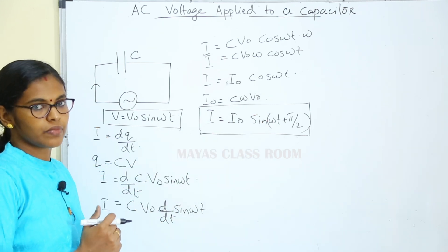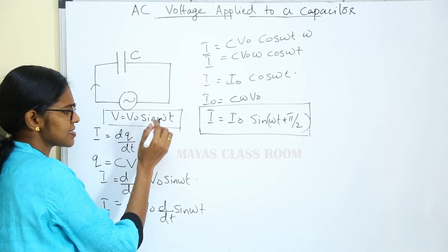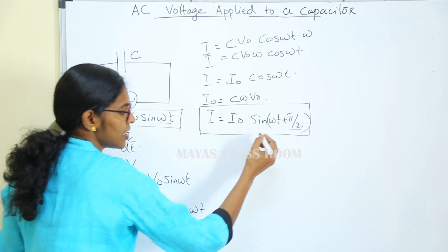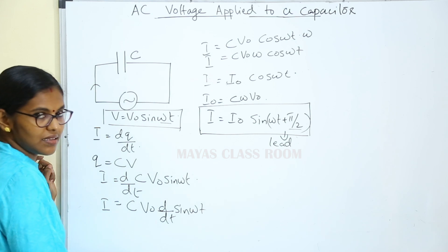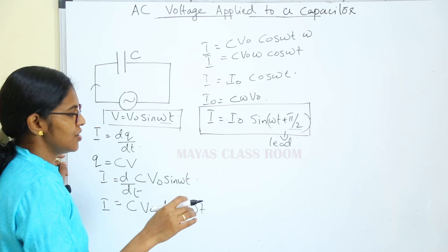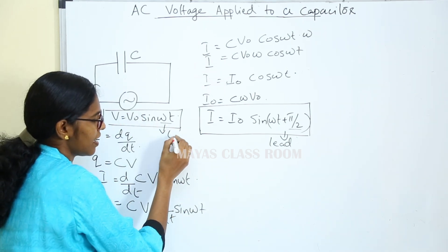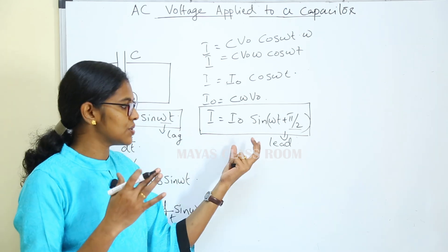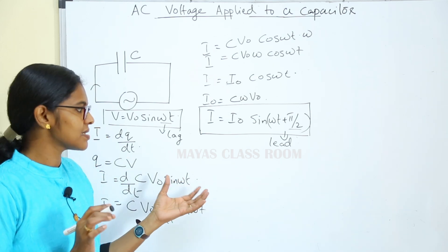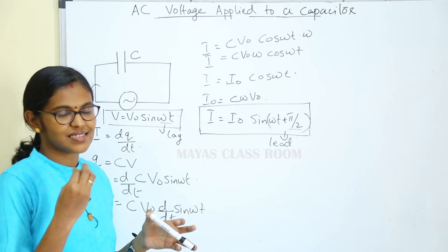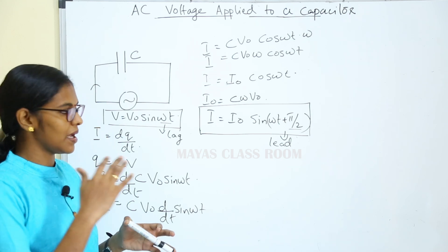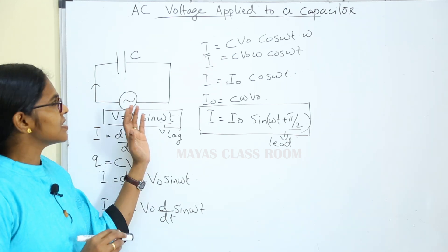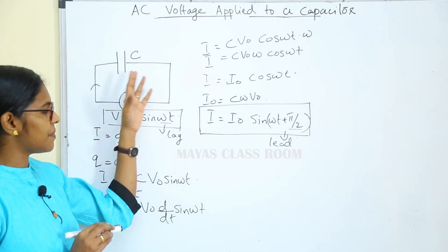The current value has sin(ωt + π/2). Since it is plus π/2, that means the current is leading. Current leads the voltage by an angle of π/2. In a capacitor, current leads voltage by π/2.